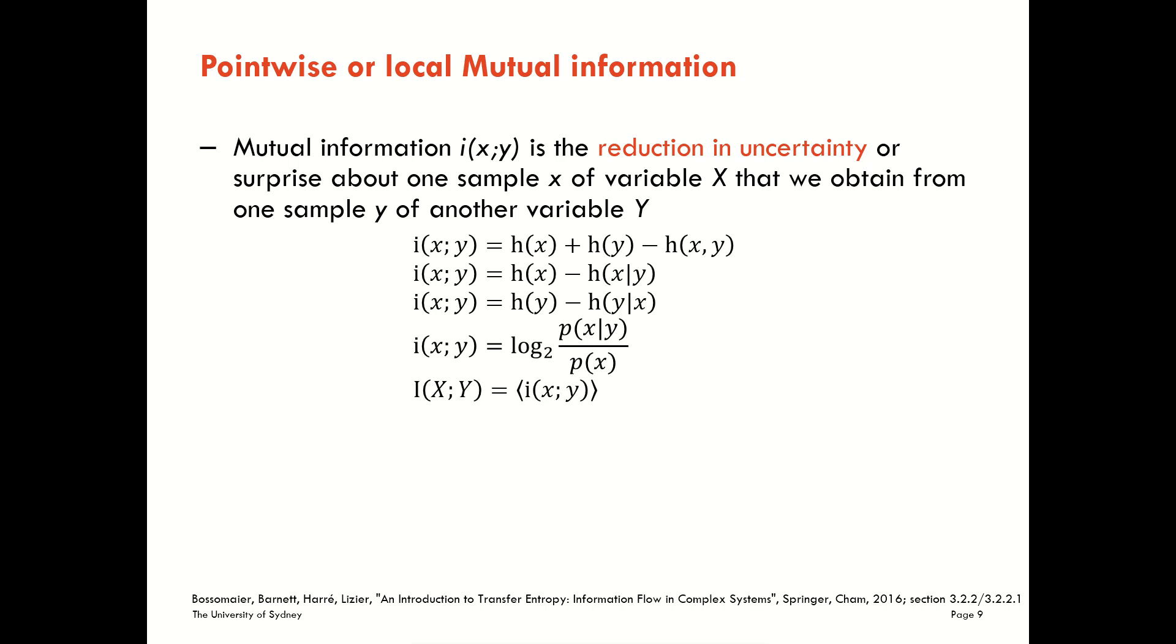The pointwise mutual information is sometimes hard to interpret. That's because it can take both positive and negative values. This is very different to Shannon information content, which could only be non-negative, zero or positive. Let's look at the meaning of positive and negative values here. For that, we're going to focus on this equation where we look at the pointwise mutual information as a log ratio between a posterior probability on X given knowledge of Y and a prior probability on X without any knowledge of Y.